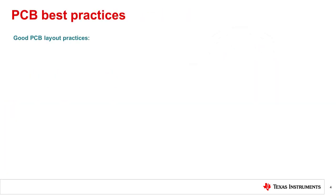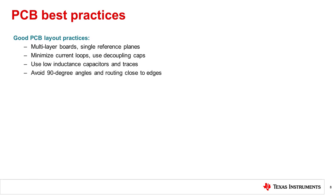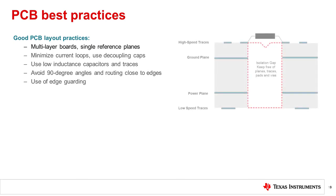The following are some of the most common recommendations to reduce emissions: use multi-layer boards with a single reference and ground plane; minimize current loops and use decoupling caps; use low inductance capacitors and traces; avoid 90-degree angles and routing close to the edges; and use edge guarding.